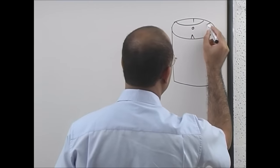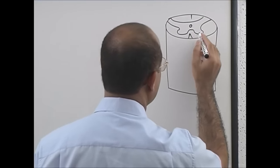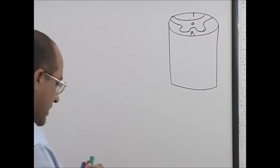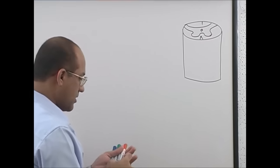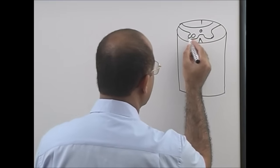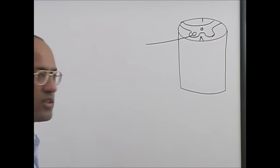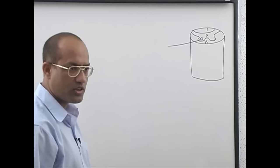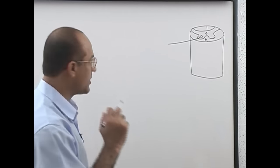In a cross-section of the spinal cord, there are anterior and posterior horns. The anterior horn is the motor horn, from where motor neurons come out. These motor neurons coming out from the anterior horn are destined to supply the neuromuscular junction — the junction between the nerve and the muscle.